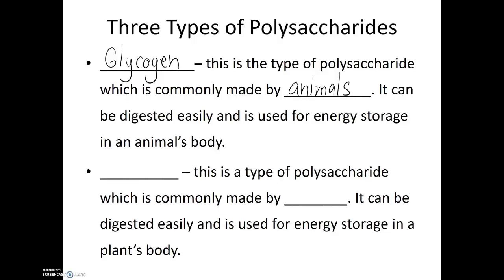A similar polysaccharide, but one made in plants, is known as starch. As with glycogen, starch is easily digestible. It can be a great source of energy, both for the plant or any animals or organisms which consume that plant. Starch is a polysaccharide commonly made by plants and used for energy storage within the plant's body.